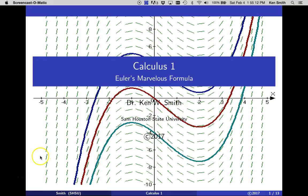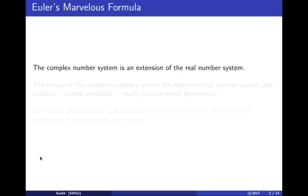In this lecture we look at Euler's marvelous formula. The complex system is an extension of the real number system.